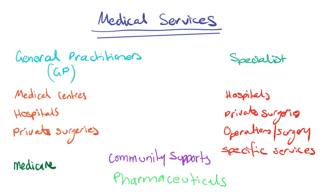Outside of GPs and specialists, community supports are a significant factor in providing an environment conducive to positive health. These supports promote health but are not a recognised part of the health care system. For example, the food industry implements policies to ensure food safety standards and displays nutritional information on packaging. Town planners and engineers also have a role in providing safe infrastructure and increasing areas for physical activity such as playgrounds and sports fields within the community.